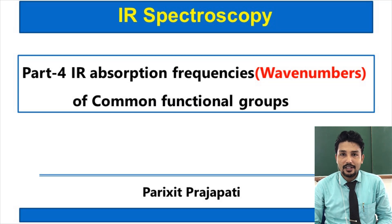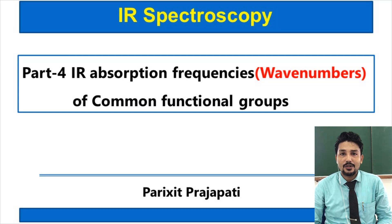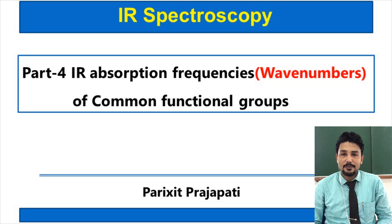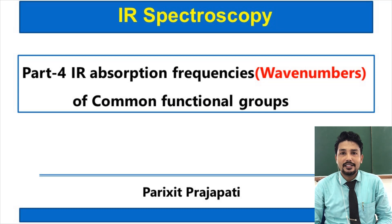For any particular bond there are many fundamental vibrations. Depending on how many vibrations are there and what is the energy to cause the transition from one vibrational state to another vibrational state, they absorb IR radiation. A particular bond will require a specific amount of energy, in other terms a specific frequency.